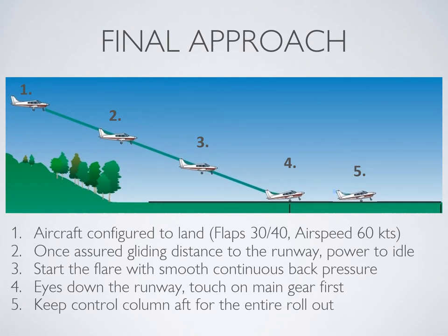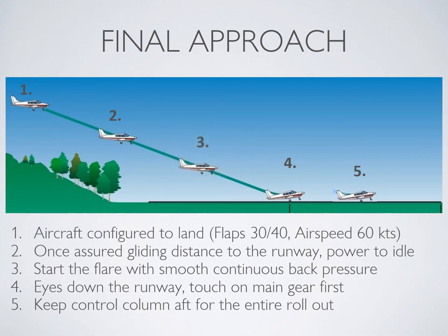Your final approach looks like this: you're configured to land, you're on centerline, and you're straight. Once gliding distance to the runway is assured, bring power slowly to idle and start the flare just before your aiming point by slowly bringing the control column back towards you. Keep your eyes down the runway straight ahead. Once you've settled on the ground, keep that control column all the way back into the rollout.